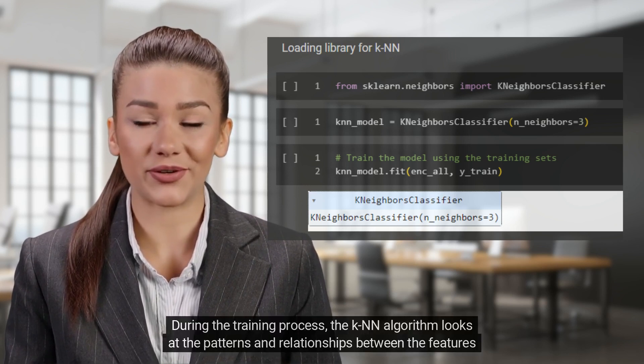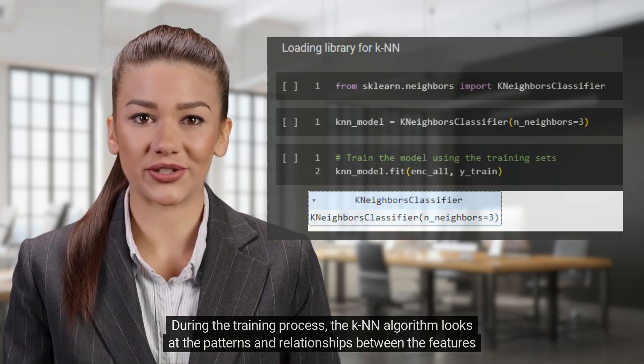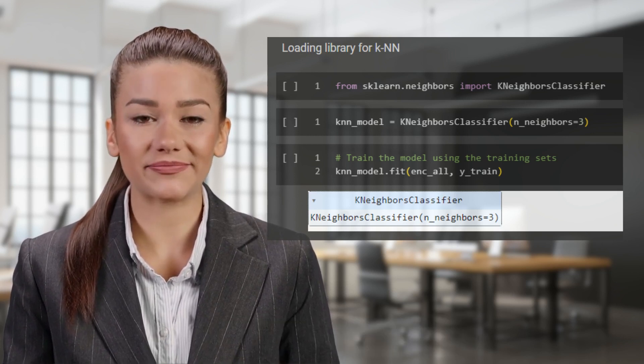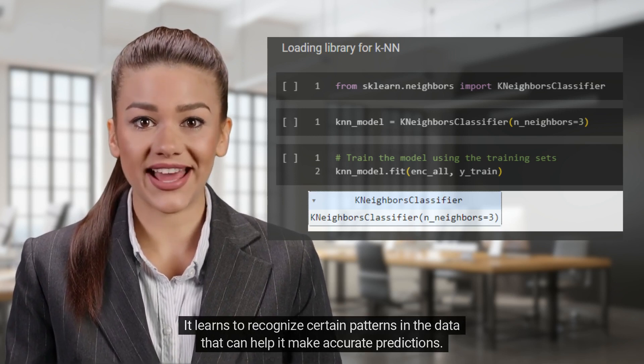During the training process, the K-N-N algorithm looks at the patterns and relationships between the features and their corresponding labels. It learns to recognize certain patterns in the data that can help it make accurate predictions.